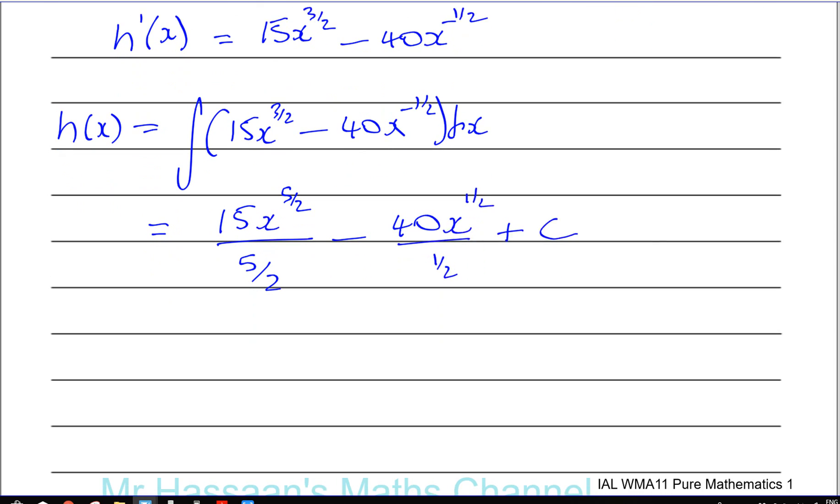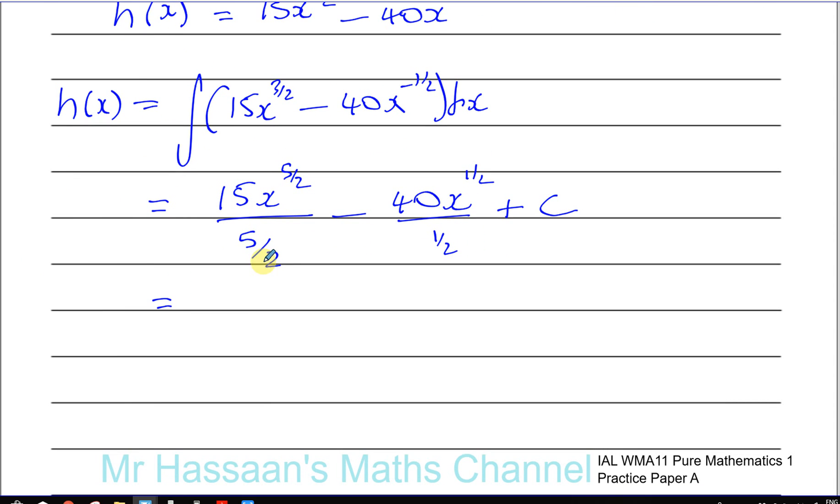So now let's simplify this. This is when you're dividing by a fraction, you're multiplying by its reciprocal. So it's like two fifths times 15x to the power of five over two.